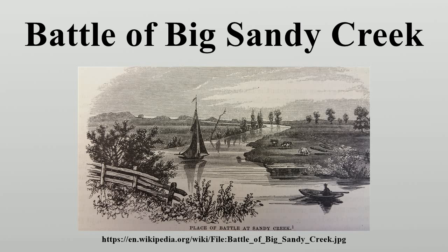Appling wrote to Brigadier General Edmund P. Gaines on May 30, listing the British casualties as 13 killed, two lieutenants of the Royal Marines and 28 sailors and marines wounded and captured, and seven officers and 133 others taken prisoner. Also captured were three gunboats, two cutters, and one gig.